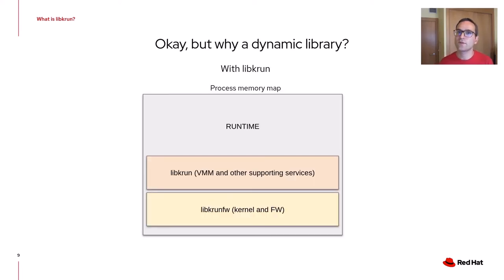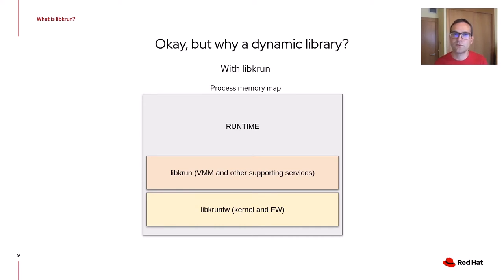So what happens with LibKRUN? With LibKRUN, the runtime is linked against the dynamic libraries. The moment the runtime is executed, the dynamic loader brings LibKRUN and LibKRUN firmware with all their components into the process memory map of the runtime. This means the runtime can safely switch between different namespaces, including mount namespaces, knowing it will carry with it all the dependencies it needs to run the lightweight VM.